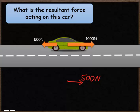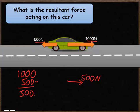These 500 newtons effectively cancel out 500 newtons from the 1000. So if we do 1000 take away 500 newtons, the forward force is bigger, so the resultant force would be 500 newtons in the forwards direction.